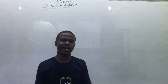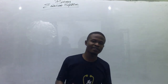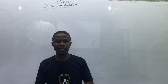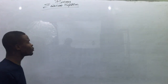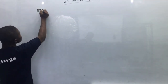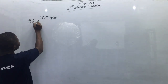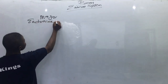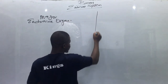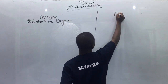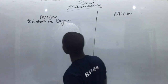Let's go ahead and list the endocrine organs in the body, cephalocaudal — meaning from the head to the toe. I'm going to list the major endocrine organs or glands, and we are going to have the minor ones.